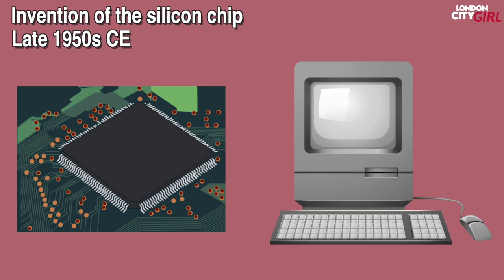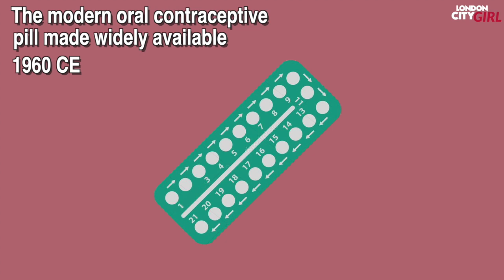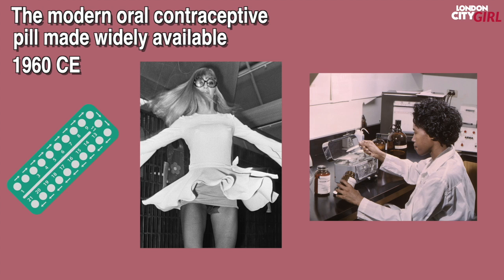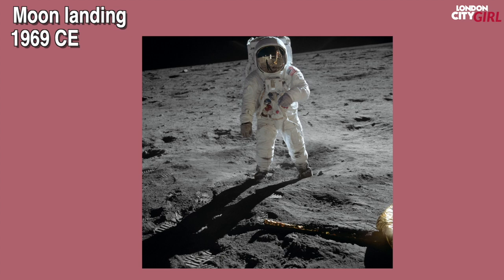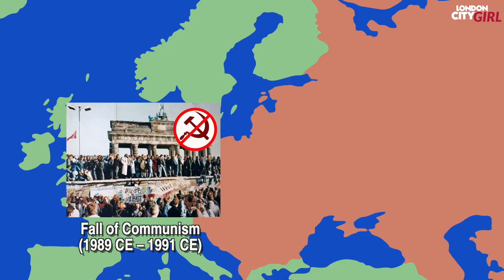From 1960 CE the modern oral contraceptive pill started to become widely available to women, transforming lives and leading to a dramatic change in women's education and participation in the labour market. In 1969 CE the first manned moon landing took place. 1989 CE to 1991 CE saw the collapse of communism across Europe. Despite its high ideals, in practice communism had led to low production and mass poverty which resulted in its rejection across the region.